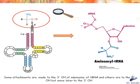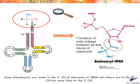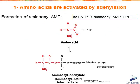Let's zoom in at the amino acid attachment zone. We have the tRNA in pink and the amino acid in blue. The attachment of the carboxyl function of the amino acid to the OH of adenosine allows the formation of an ester linkage. Some attachments are made to the 3'OH of adenosine of tRNA, and others are to the 2'OH but move later to 3'OH.